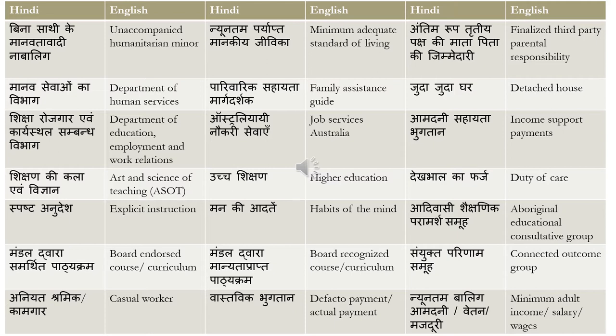'Mandal Dwara Manyata Prapta Pathyakram' is board recognized course or curriculum. There is a minor difference between endorsing and recognizing: endorsement means giving your support, so we say Samarthit; recognition is like accreditation, which gets translated as Manyata Prapta. Next, 'Saiyukta Parinam Samuha' means joint or connected outcome group — Saiyukta is joint or connected, Parinam is outcome.